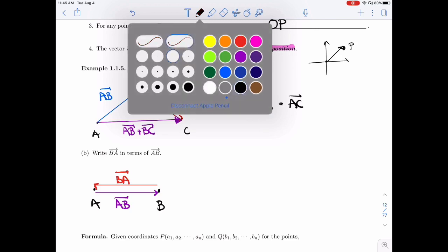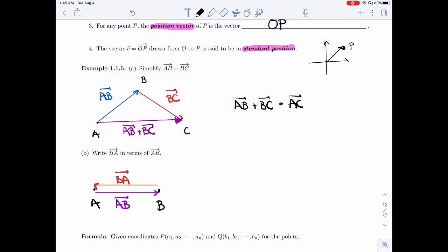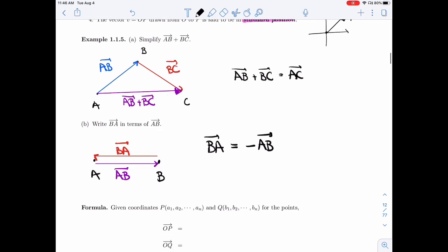Now, AB and BA have the same length, but they have opposite direction, and so BA is minus AB. So if I switch the order of the points, then it flips the vector. We get its inverse.